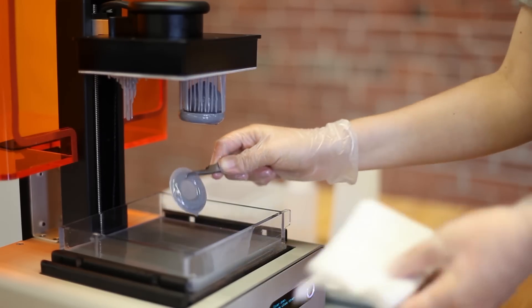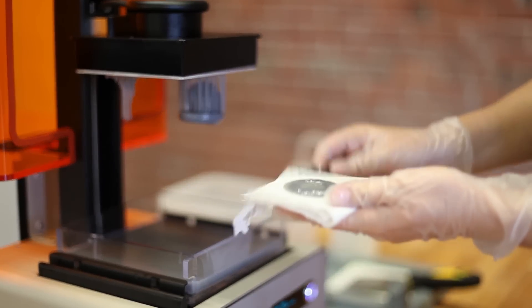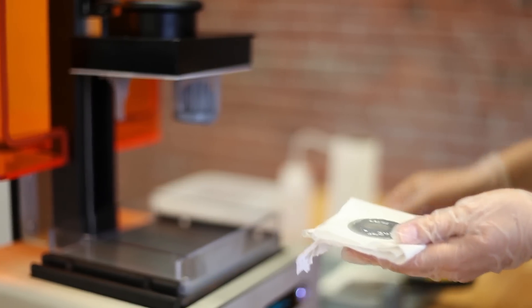Place the removed material on a paper towel and set it out so any uncured resin can solidify. Once all of it is hardened, you can dispose of it in the trash.